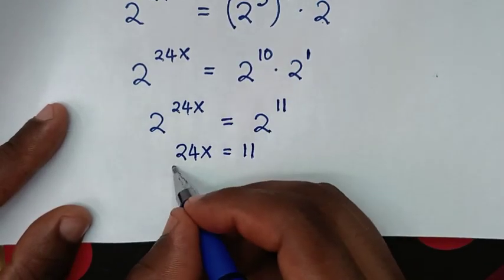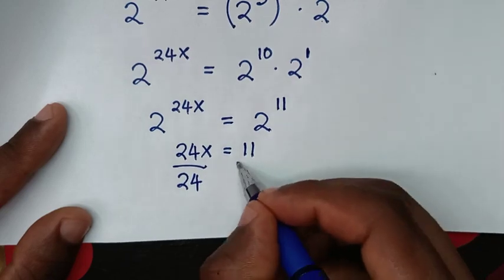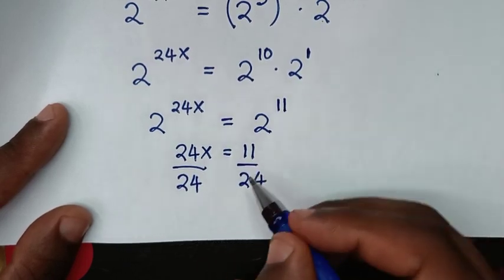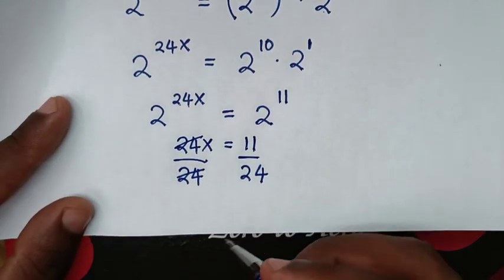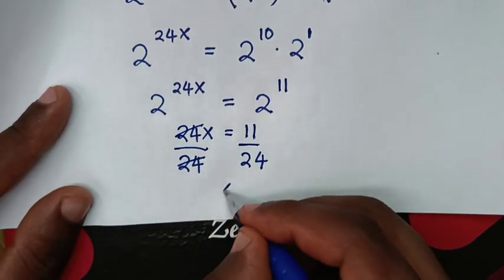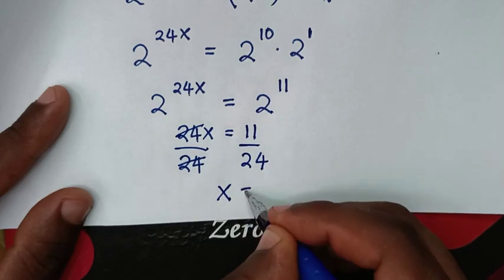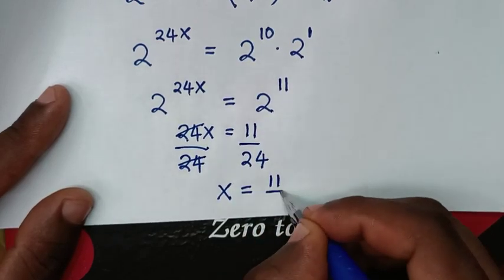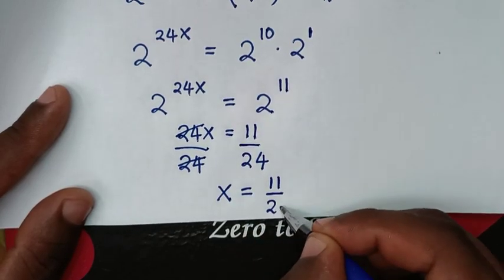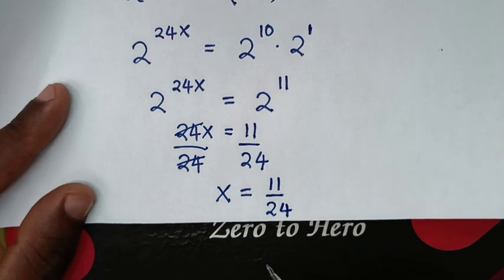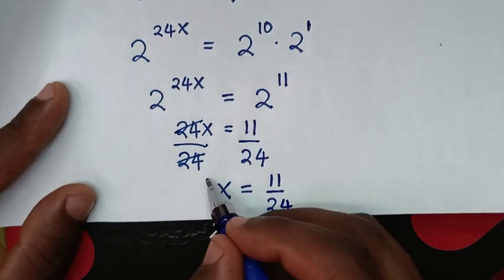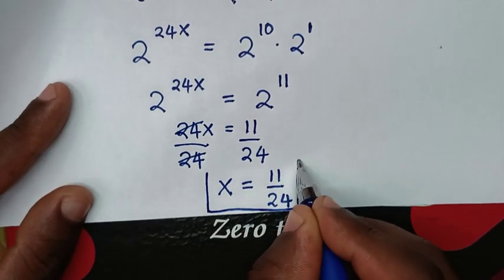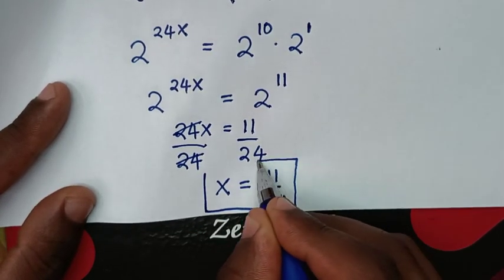We divide both sides by 24. This cancels, leaving x equal to 11 over 24. Therefore, this is the final answer for the value of x in this problem.